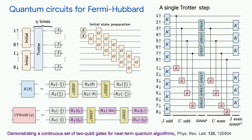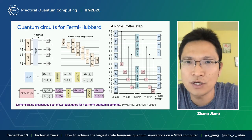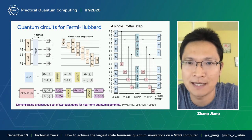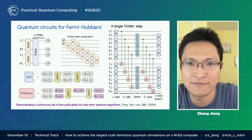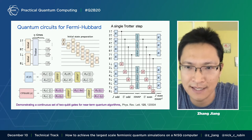Each of these gates can be decomposed into our native gate, the square-root ISWAP gate. For both the K-theta gate and the C-phase-phi gate, we can use two square-root ISWAP gates and several single-qubit Z rotations and X rotations. In the future, we expect to have the capability of implementing the K-theta gate and the C-phase-phi gate as our native gates. See the reference below.